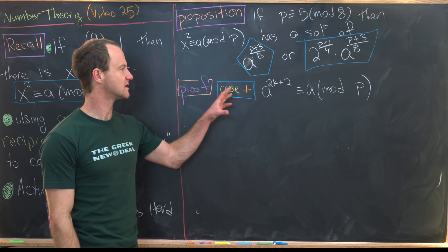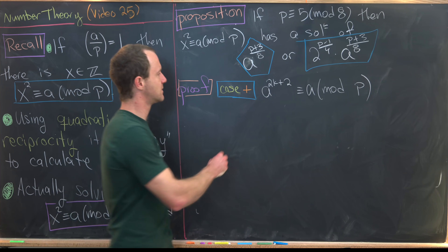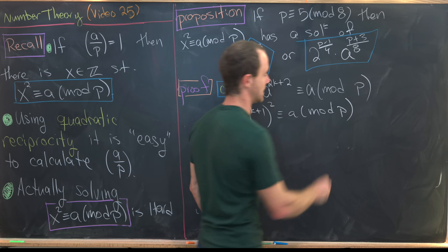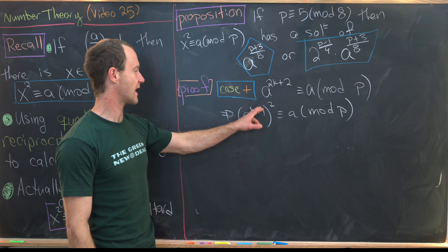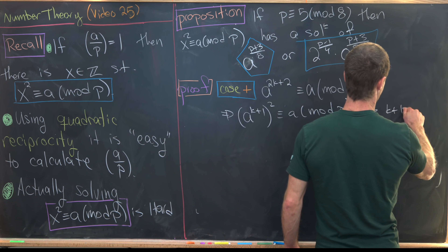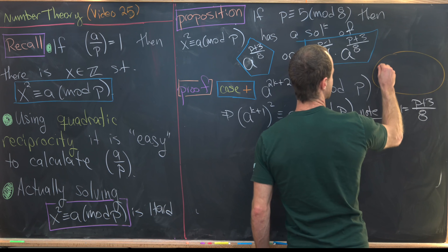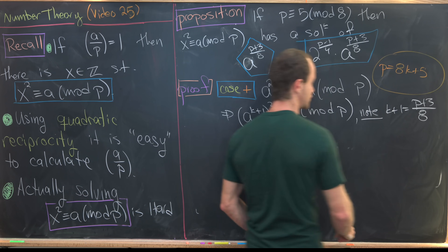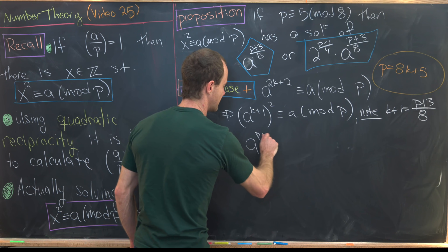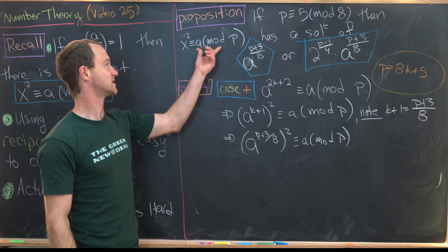Let's start with the positive case: a^(2k+2) ≡ a mod p. This means (a^(k+1))² ≡ a mod p, so x = a^(k+1) is a solution. We can calculate that k+1 = (p+3)/8, based on the original assumption that p = 8k+5. So a^((p+3)/8) squared is congruent to a mod p — this is a solution.